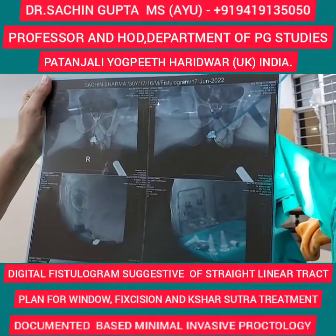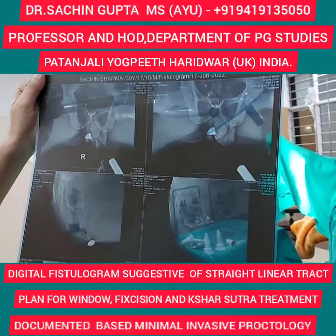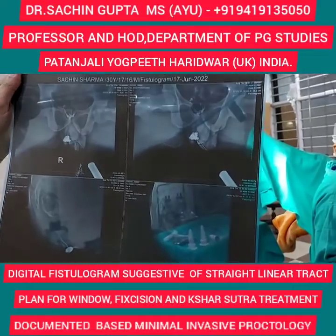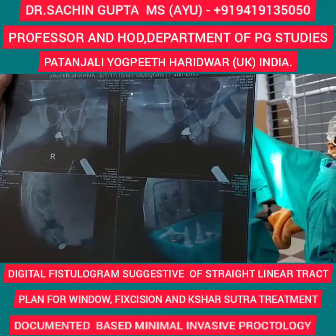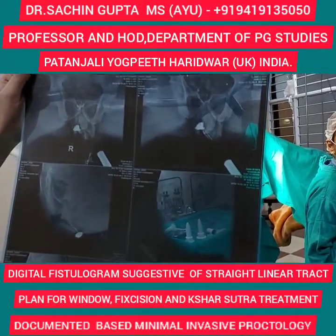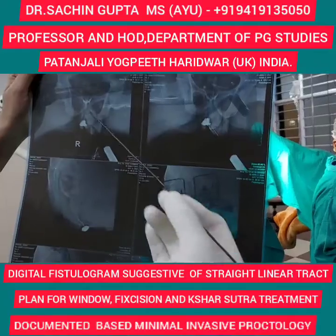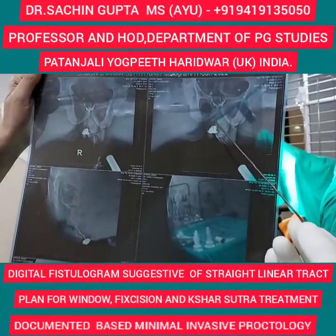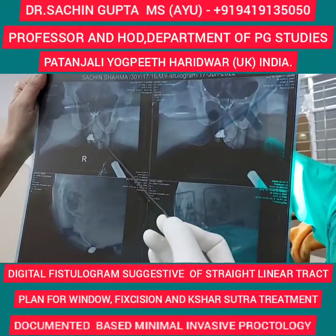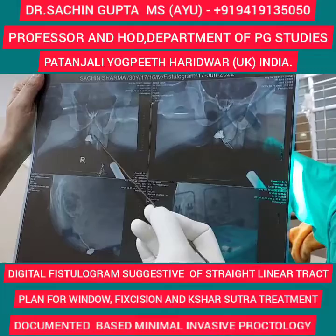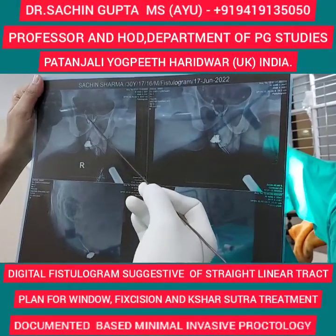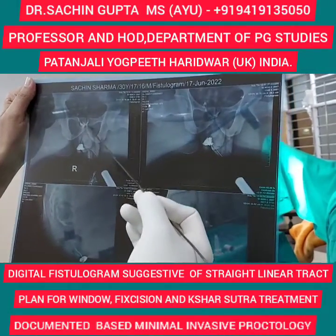The patient came to us and we examined the case and sent for a digital fistogram with two views — one is AP and another one is a lateral view. In the AP view, you can see there are two films. The dye is passed and it reaches below the sacroiliac joint, and there is a spillage of dye inside the rectum.